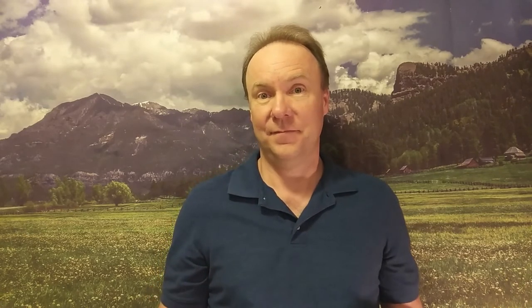At that point, the OxLDL interacts with macrophage, forming foam cells — that's the secondary approach. Here is a short movie that describes the secondary LDL oxidation process. Over long periods of time, plaque buildup in the arterial walls will actually reduce the cross-sectional area of your arterial blood vessels, making them smaller.